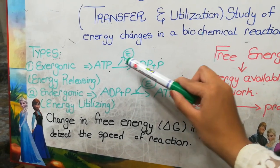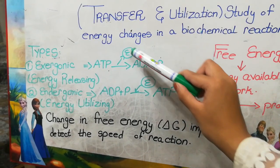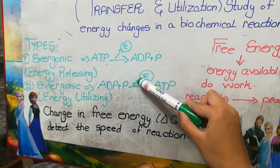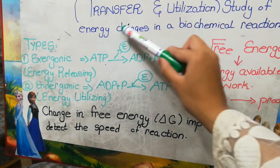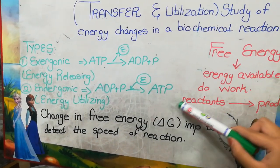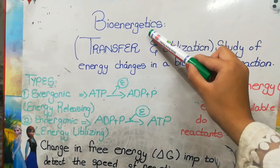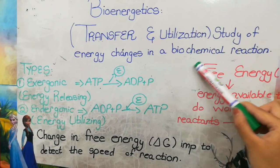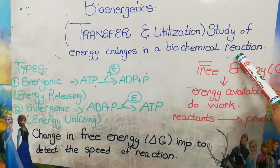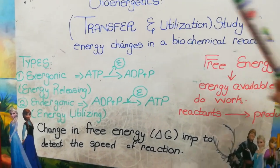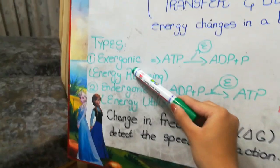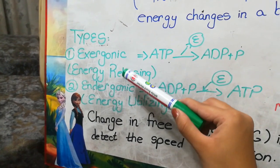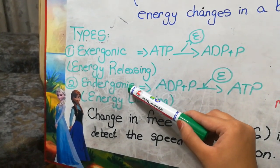The energy changes occurring in a biochemical reaction — that is, either there is a transfer of energy or utilization of energy — that is discussed in the topic known as bioenergetics. The reactions in a biochemical reaction are of two types: number one is the exergonic reaction and number two is the endergonic reaction.